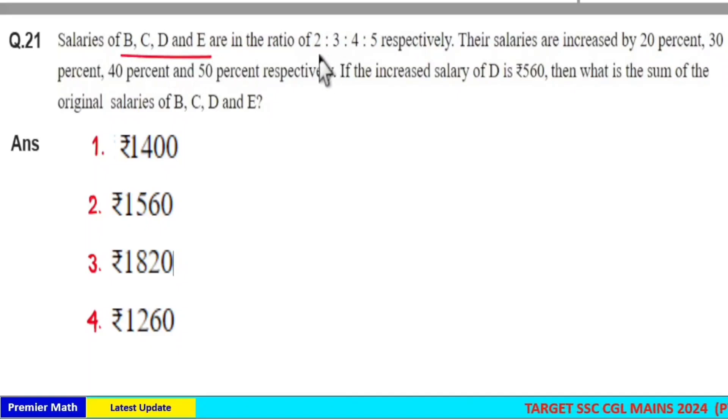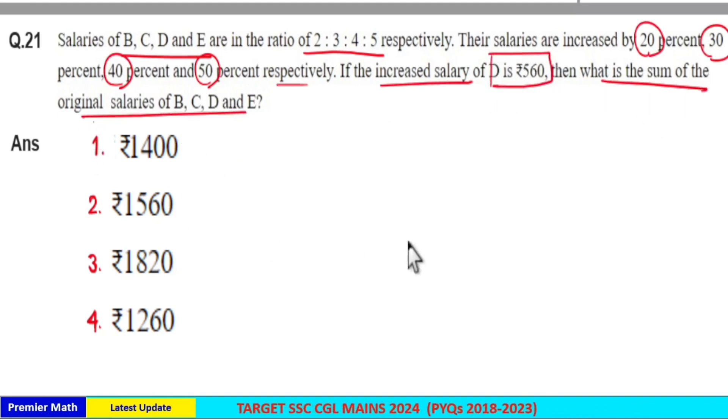Salaries of B, C, D and E are in the ratio 2:3:4:5 respectively. Their salaries are increased by 20%, 30%, 40% and 50% respectively. If the increased salary of D is Rs.560, then what is the sum of original salaries of B, C, D and E?